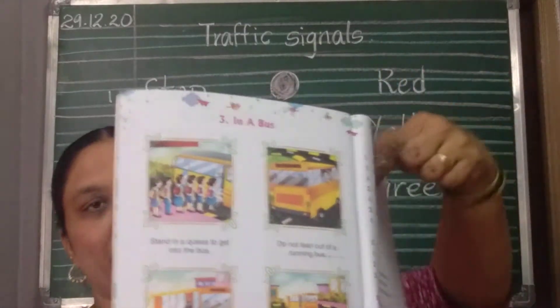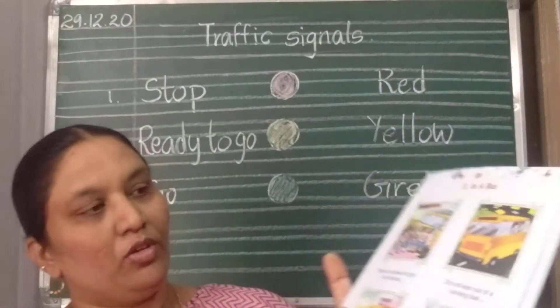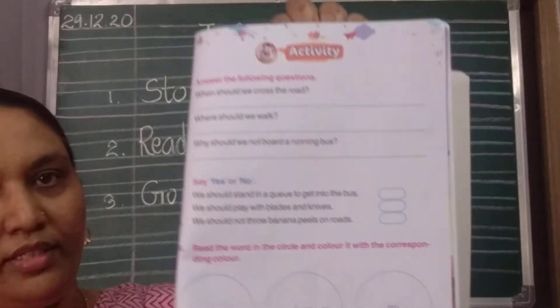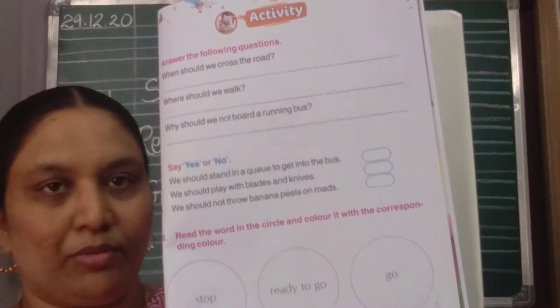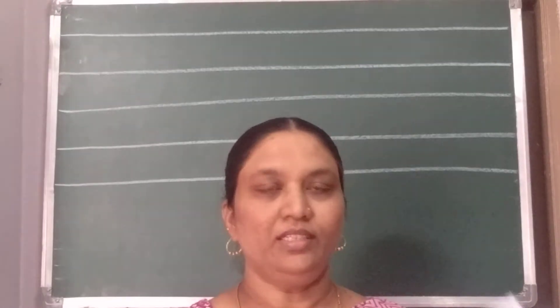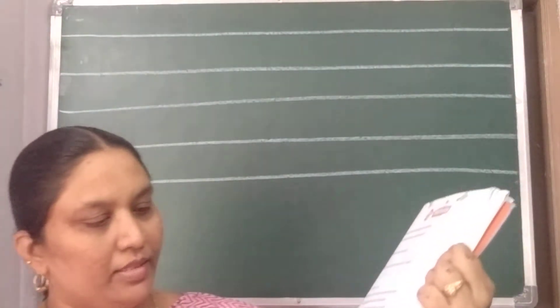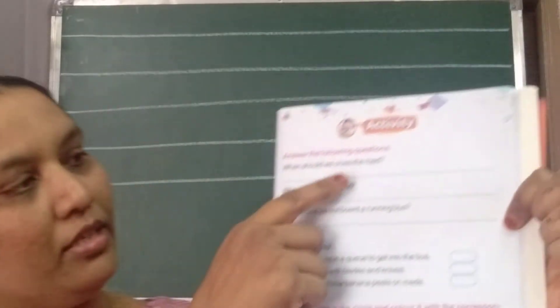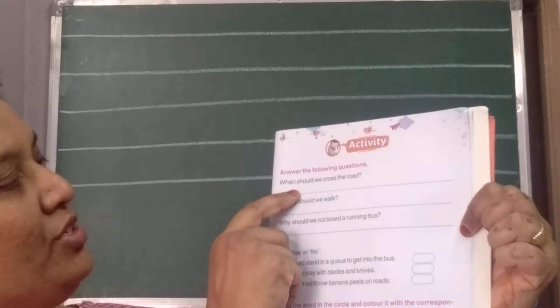Okay children, the practice book is done — we have already done that page. This page I am going to write on the board now. Ready with your course book? This is page number 73. The first question is: when should we cross the road?